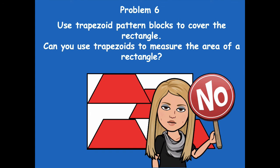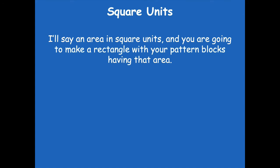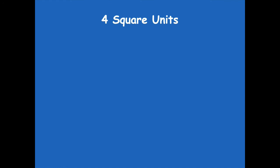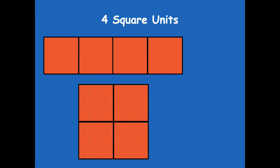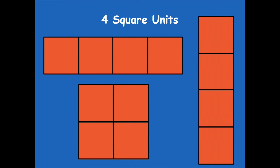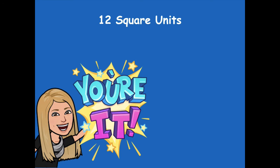Now I'll say an area in square units and you'll make a rectangle with your pattern blocks having that area. We're using square units, so the pattern block we use is the square. For four square units, here's one example — four squares arranged this way; here's another arrangement. Each uses four square pattern blocks, giving an area of four square units. Now go ahead and pause the video to create a rectangle with an area of twelve square units.